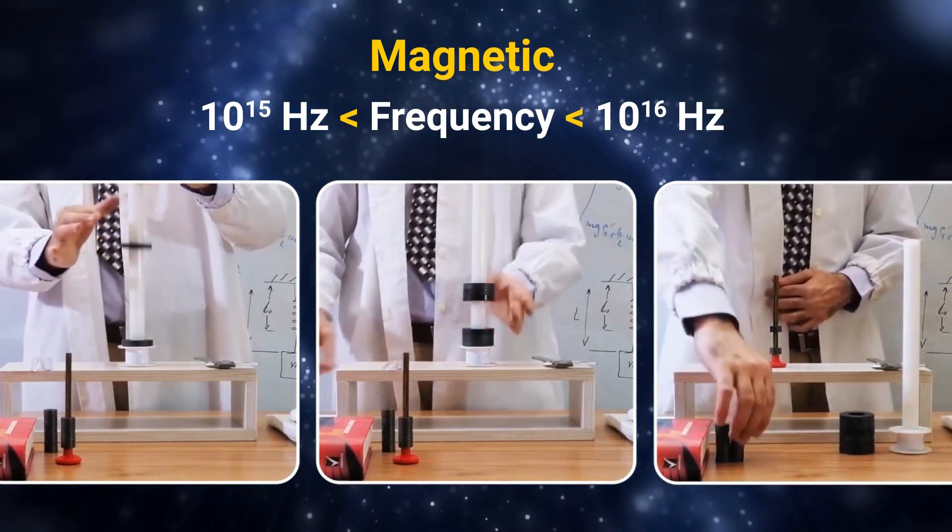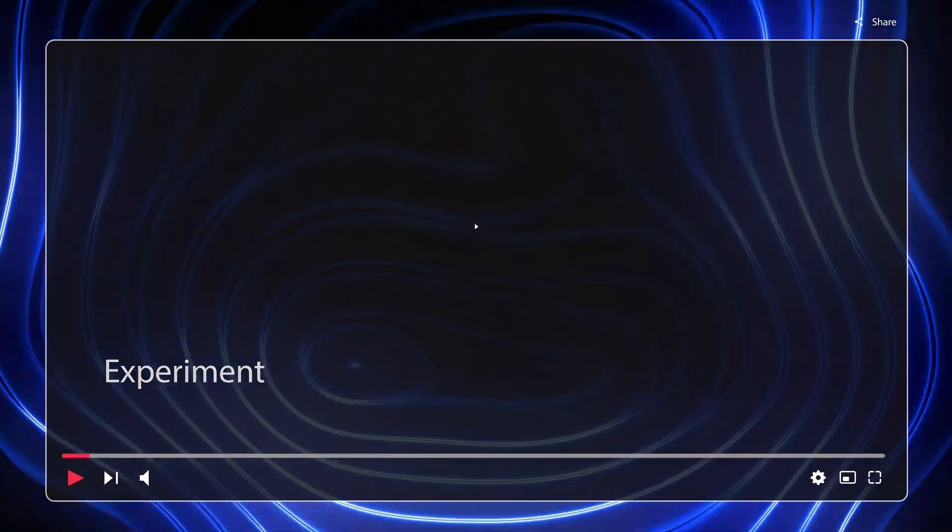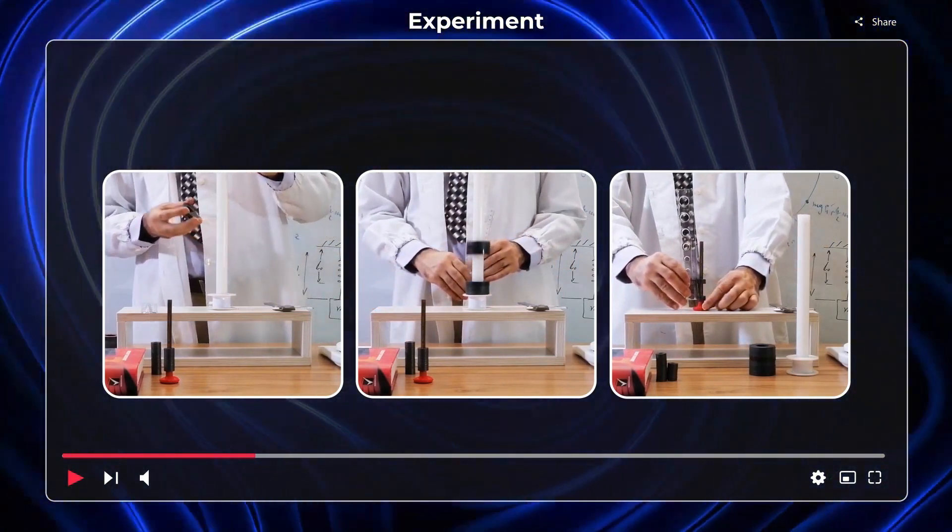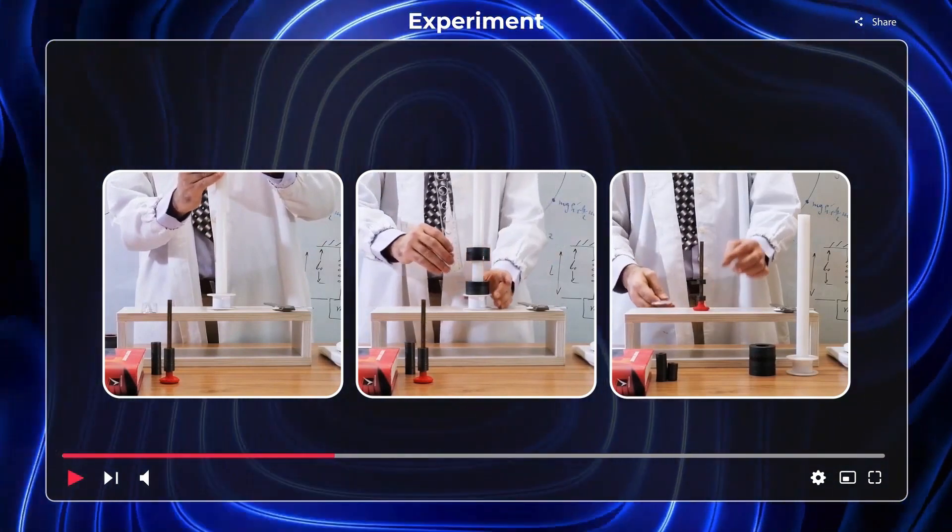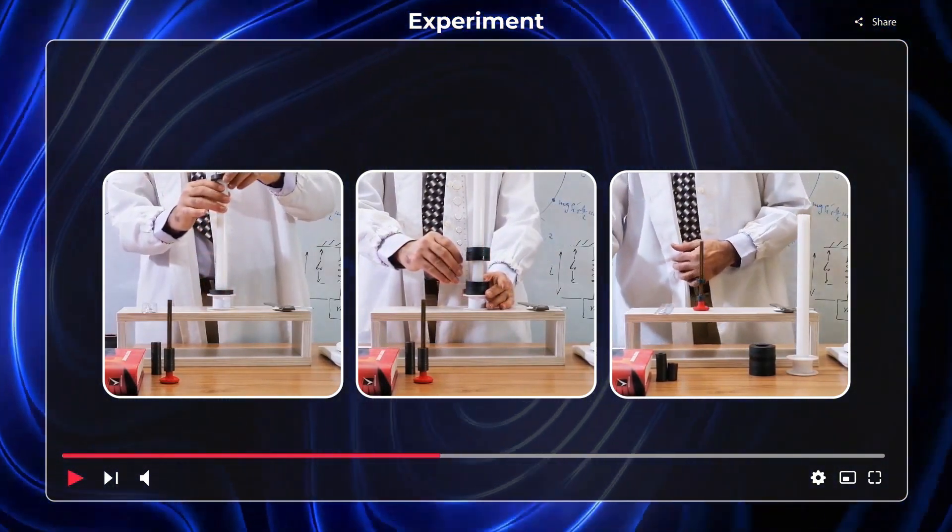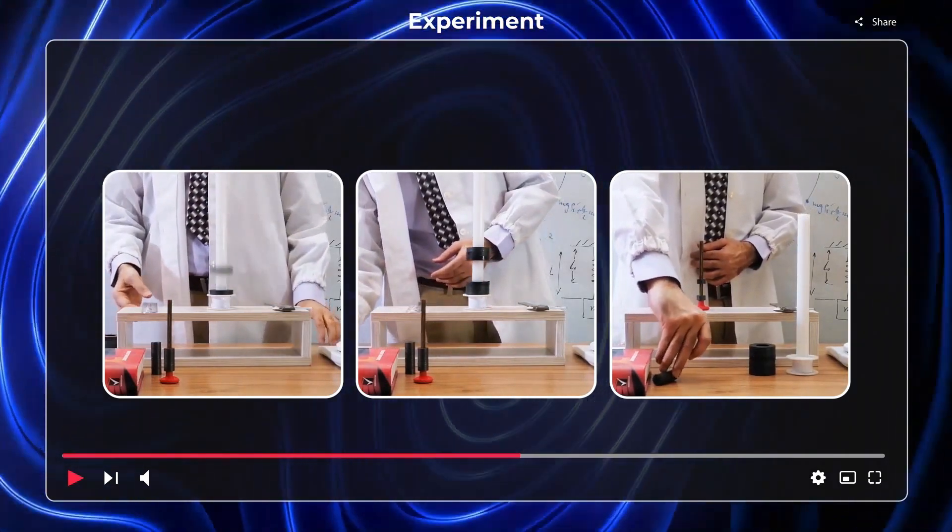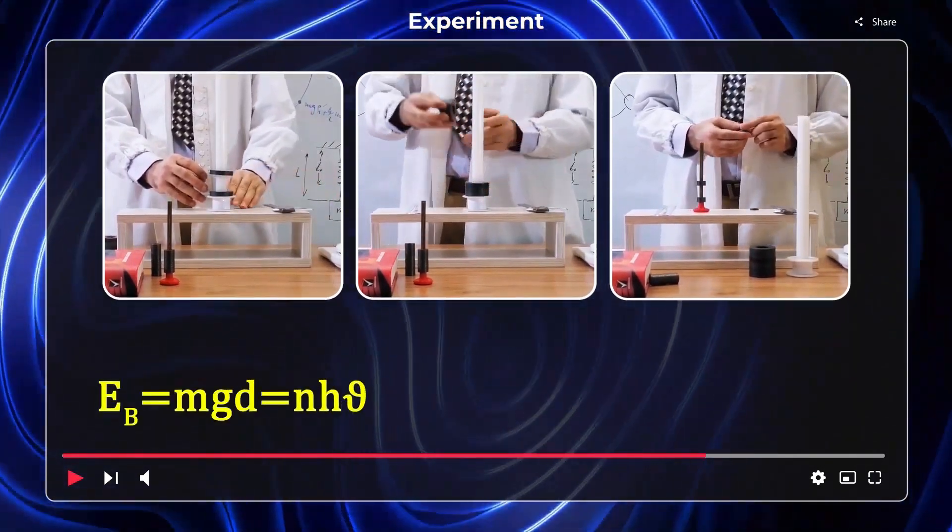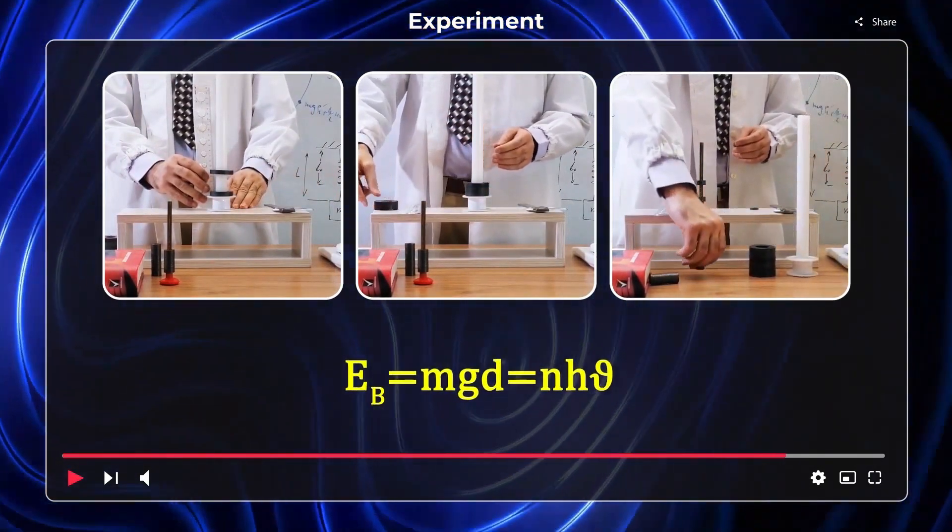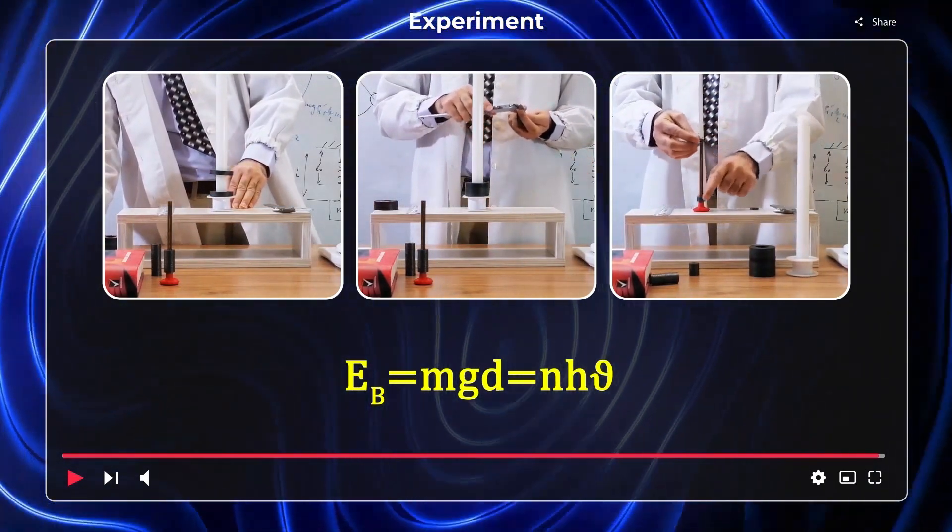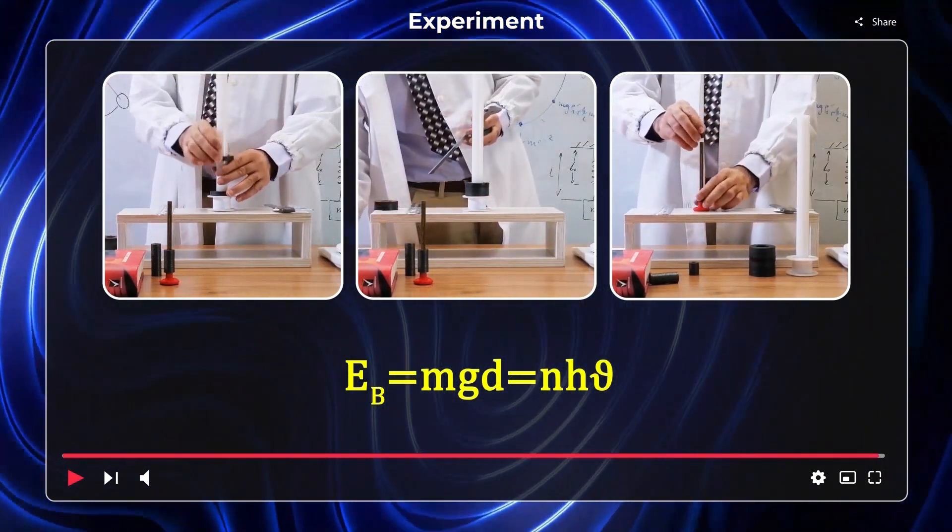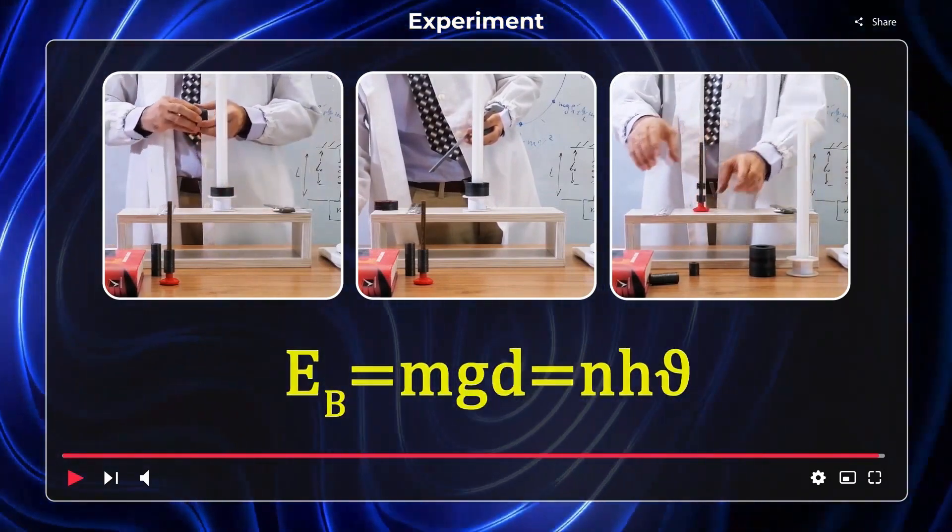Two annular magnets with identical characteristics are placed facing each other by the same poles. The upper magnet is in equilibrium thanks to the interactions between the force of its weight and the magnetic force of the lower magnet. Therefore, the gravitational potential energy of the upper magnet must be equal to the magnetic energy of the lower magnet. Then, we measure the distance between the two magnets. By multiplying this distance with the mass and the gravitational constant of the Earth, g equals 10, we obtain the gravitational potential energy of the upper magnet which is equal to the magnetic energy of the lower magnet. On the other hand, we consider the magnetic energy of the magnet as N h nu and deal with the calculation of the frequency of the magnetic field of the magnet.